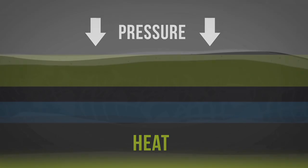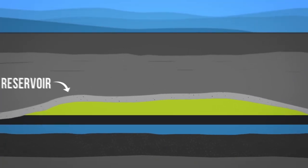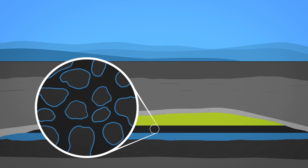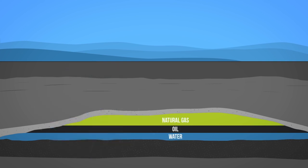Natural gas is found in underground rocks called reservoirs. The rocks have tiny spaces called pores that allow them to hold water, natural gas, and sometimes oil. The natural gas is trapped underground by impermeable rock, called a cap rock, and stays there until it is extracted.